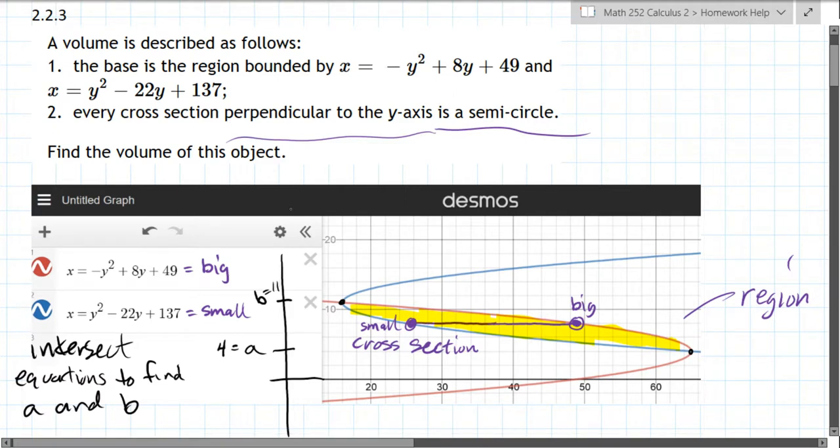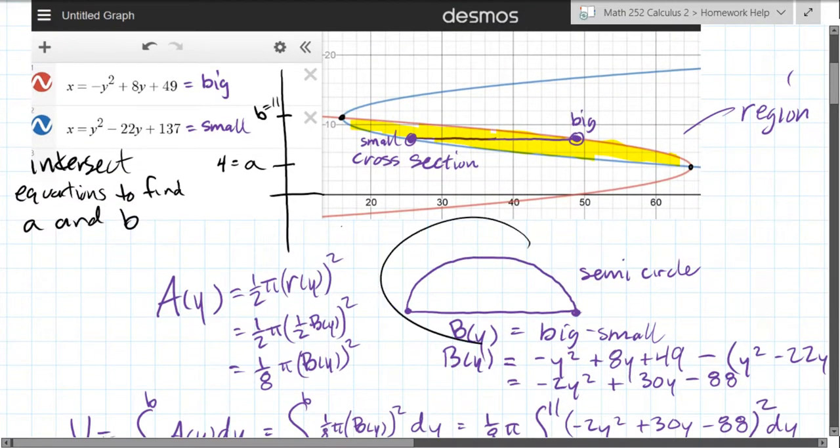So I drew my cross-section right here, and everything is perpendicular to the y-axis. Now every cross-section is a semi-circle, so each one of these is a half-circle.